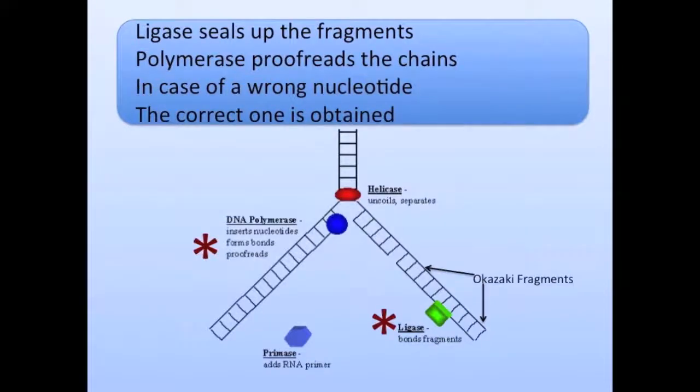Ligase seals up the fragments. Polymerase proofreads the chains in case of a wrong nucleotide; the correct one is obtained.